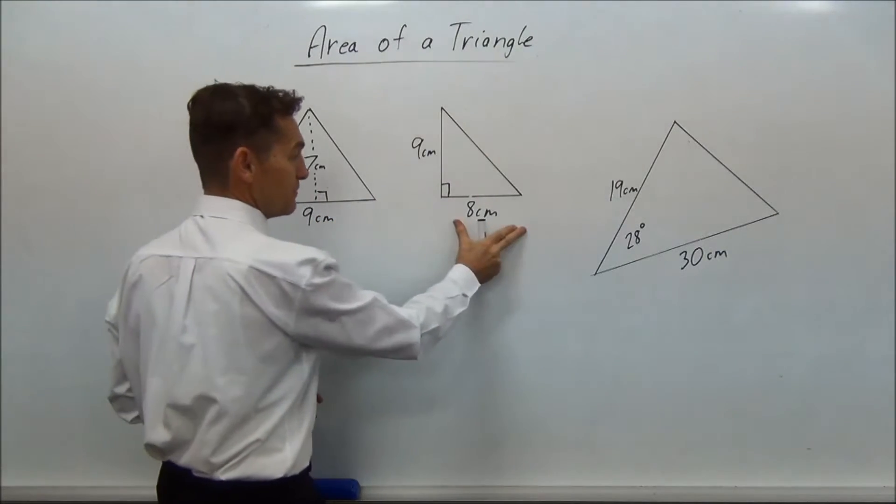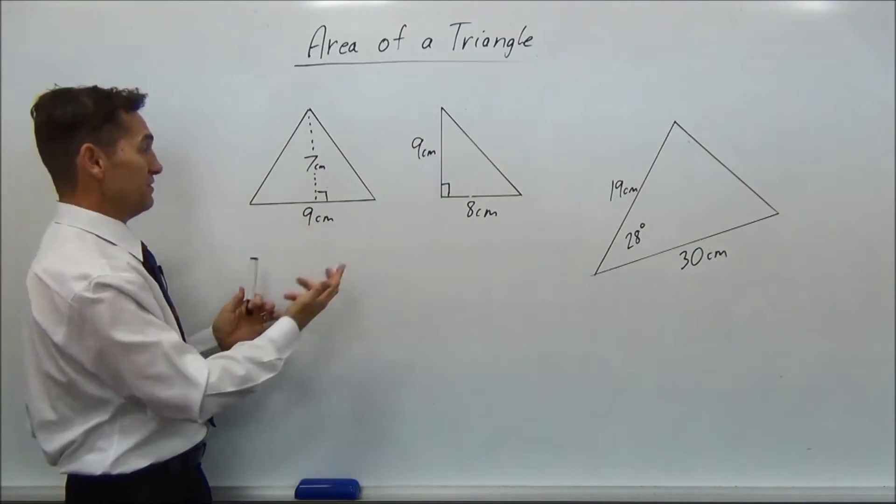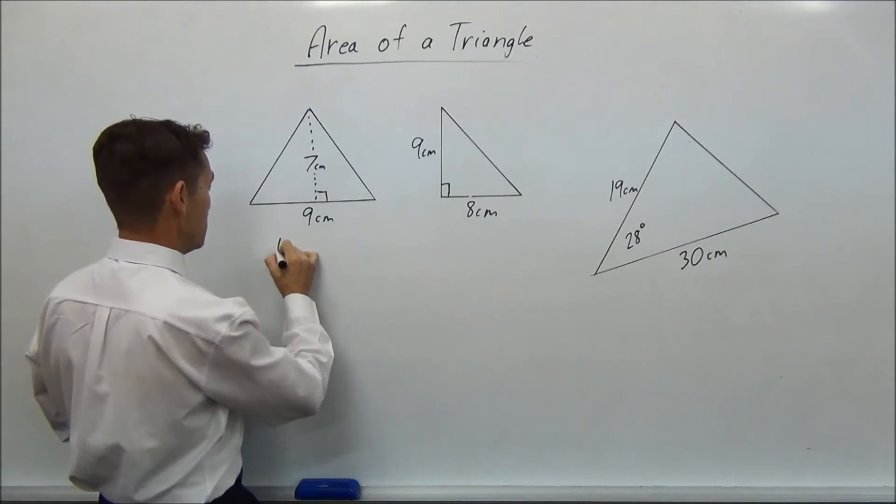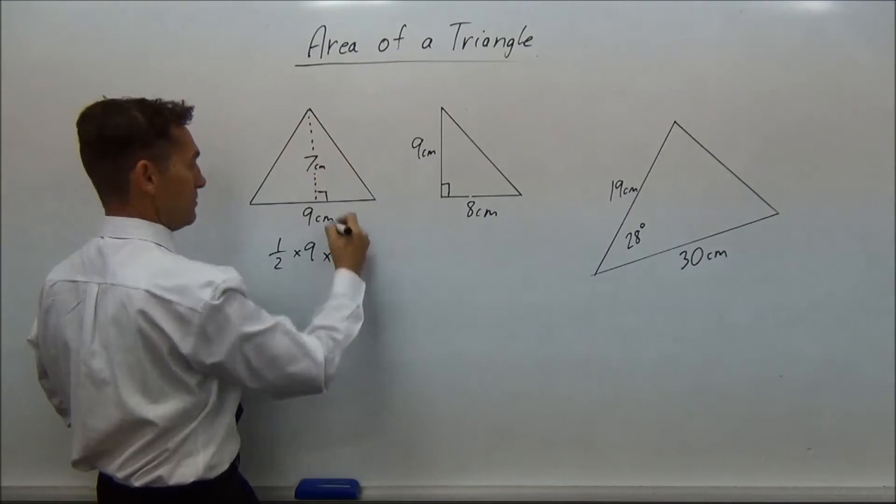So you're probably used to looking at the area of triangles which look something like this, and you look at this one and you think, oh I can do that. That's half the base, which is nine, multiplied by the height, which is seven.